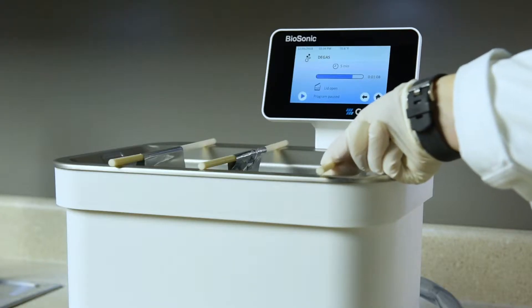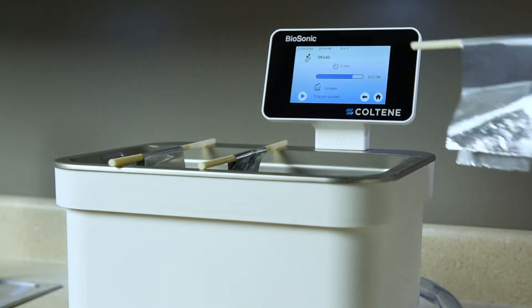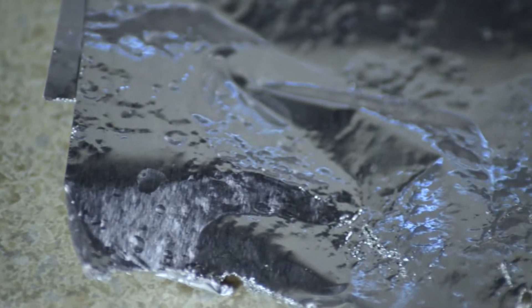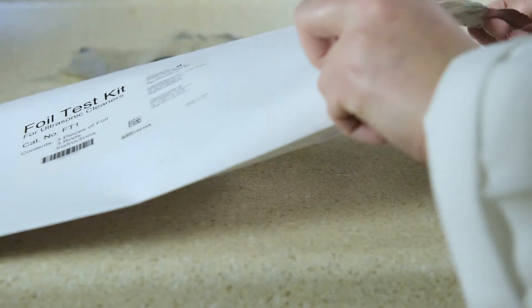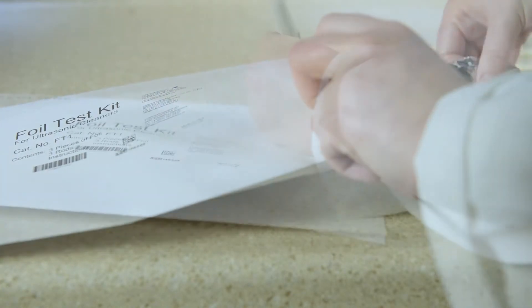Then, lift the foil out of the solution. An ultrasonic cleaner that is working properly will leave a pitted or wrinkled pattern in the foil. Holes should be observed in one or more of the aluminum foil pieces. Date the foil and keep it as a reference for the next time the test is performed.